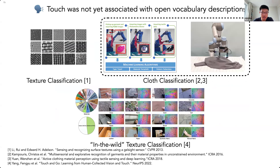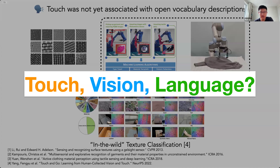More closely related to today's work are works on touch-based perception — how touch is associated with object texture or natural language descriptions of surfaces. Many existing works focus on texture and cost classification, but that data is collected in highly controlled environments. In contrast, touch is almost everywhere, which allows us to develop a more general sense of touch. In this project, we seek to associate touch with open-vocabulary descriptions and ask whether a model can handle both touch and vision inputs to generate free-form descriptions of touch.